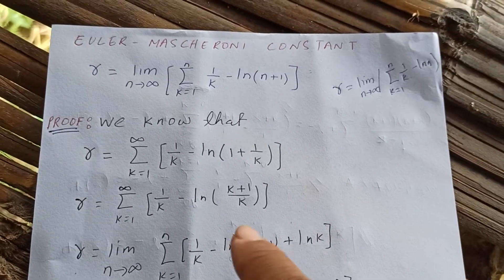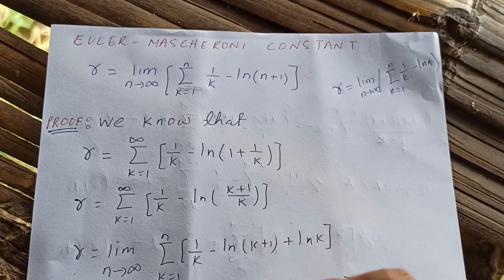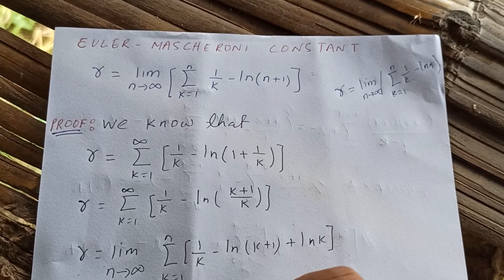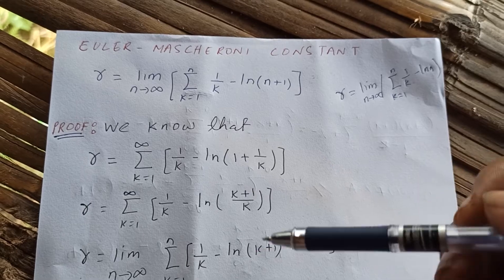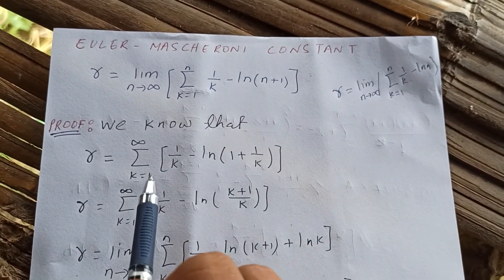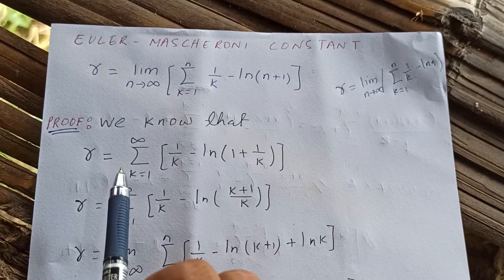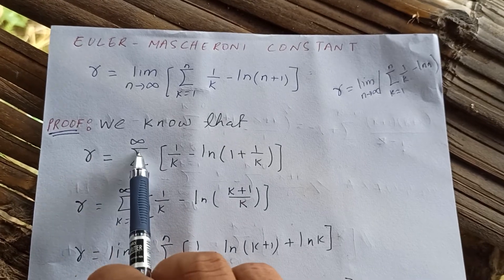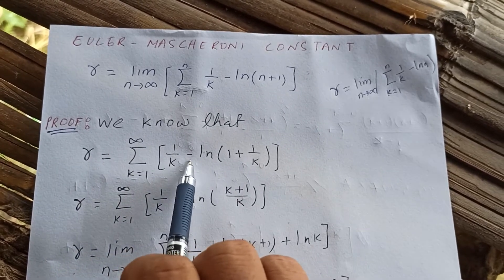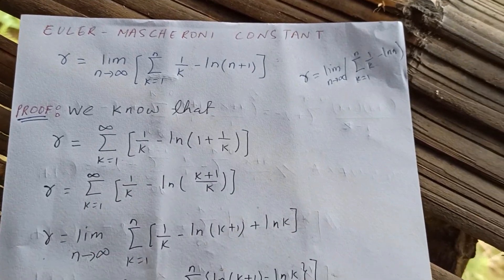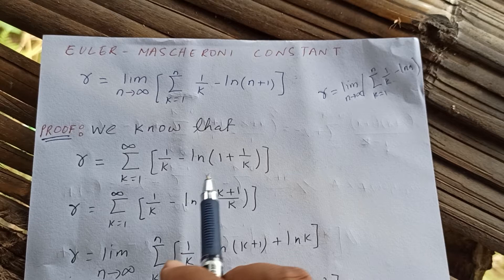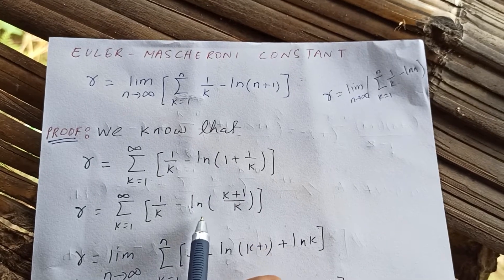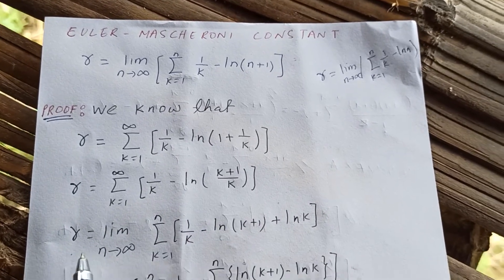To prove this, I'm just rearranging. I like the way this approach works, so I'm going to do it. We know that from the infinite series representation of the Euler-Mascheroni constant, gamma equals the sum from k equals one to infinity of one over k minus natural log of one plus one over k. We simplify the logarithm to natural log of k plus one over k.